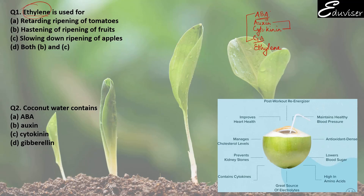So the question asks: ethylene is used for which purpose? Options are: retarding ripening of tomatoes, hastening ripening of fruits, slowing down ripening of apples, both B and C. Retarding or slowing down means to reduce, while hastening means to be very quick. Ethylene very quickly causes ripening of fruits. Ethylene is a gaseous hormone which helps in ripening of fruits. So question number 1 answer is B.